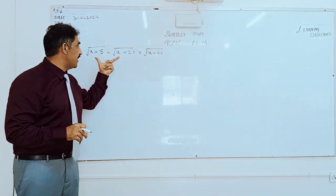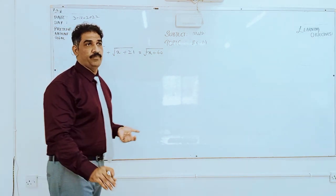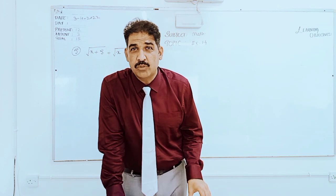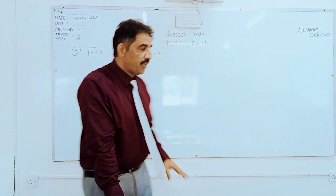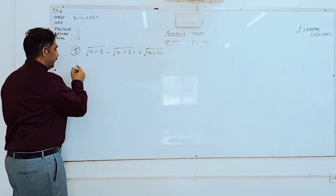First purpose is to remove the square root. How to remove the square root? By taking square. By taking square on both sides.